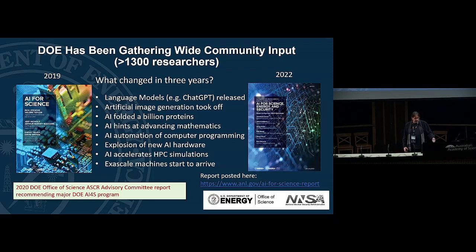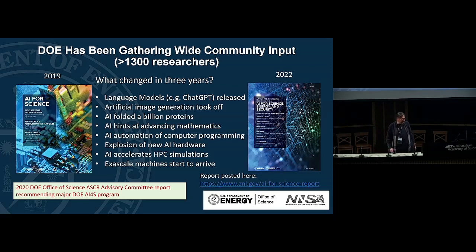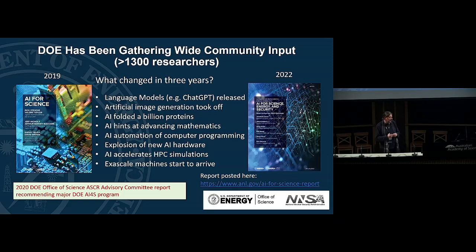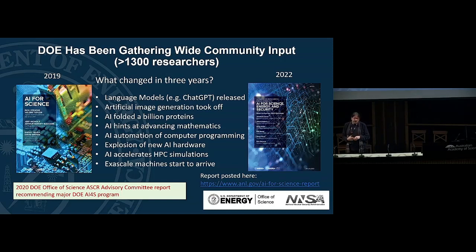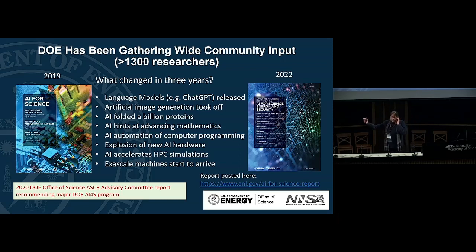What had changed in those three years gives you a sense of how fast AI was moving. Between 2019 and 2022: ChatGPT happened; large language models went from a curiosity to something changing the world; artificial image generation took off with Stable Diffusion and other methods; AI folded over a billion proteins, revolutionizing drug design; AI hints encouraged mathematicians to think about problems differently; almost everybody serious about coding is now using AI to generate code; a new class of power-efficient AI architectures emerged; new AI methods can accelerate HPC simulations through surrogates; and we got exascale machines. A lifetime's worth of accomplishments in three years.